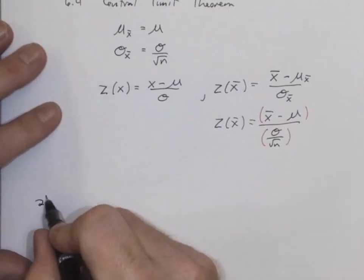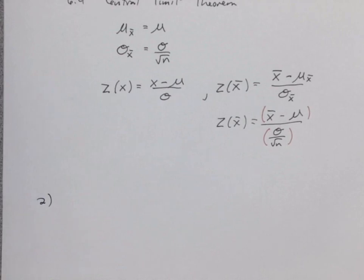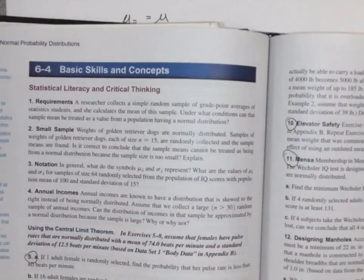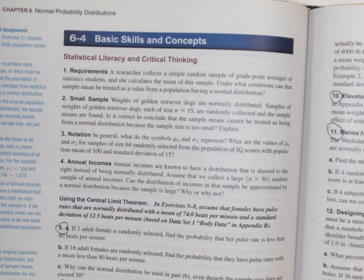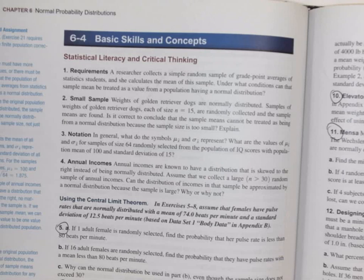Number two says: weights of golden retriever dogs are normally distributed. Samples of size n equals 15 are randomly collected and the sample means are found. Is it correct to conclude that the sample means cannot be treated as being from a normal distribution because the sample size is too small? Explain.